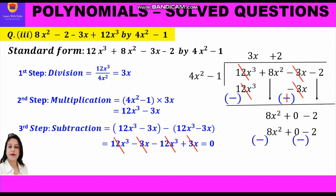We write the minus sign and change the signs. 8x² cancels with minus 8x², and minus 2 cancels with plus 2, leaving remainder 0. So the quotient is 3x plus 2 and remainder is 0.